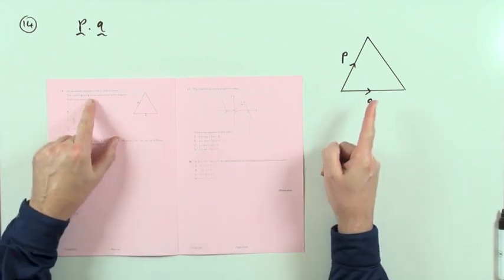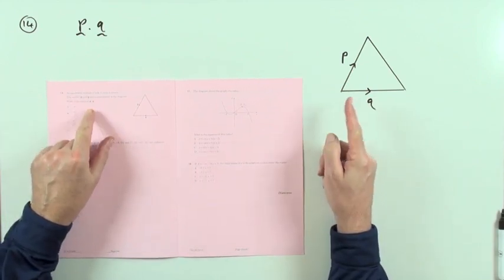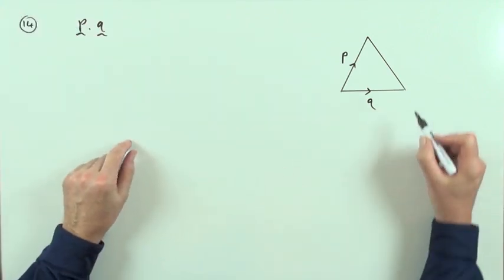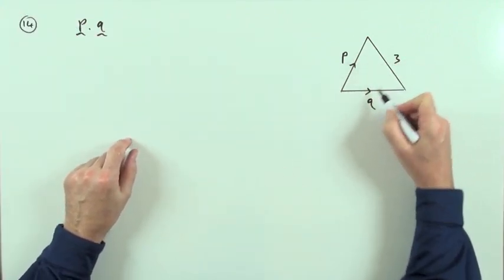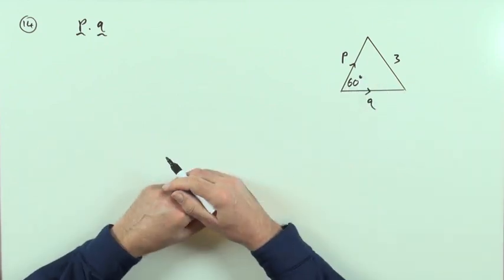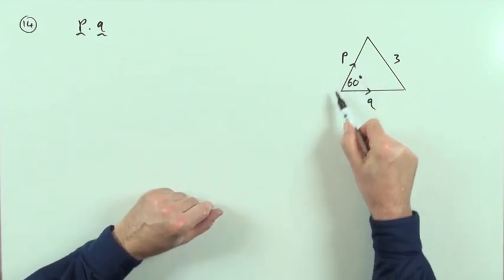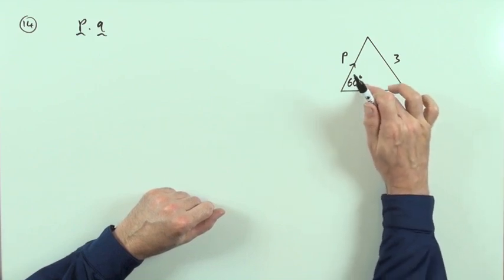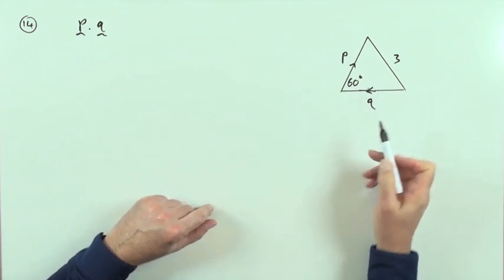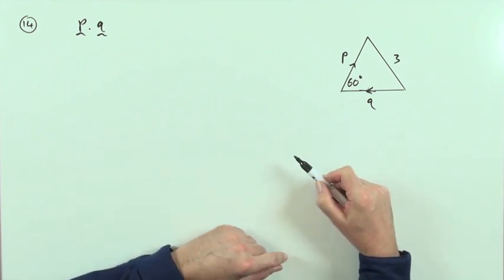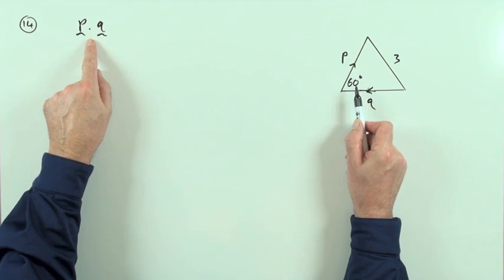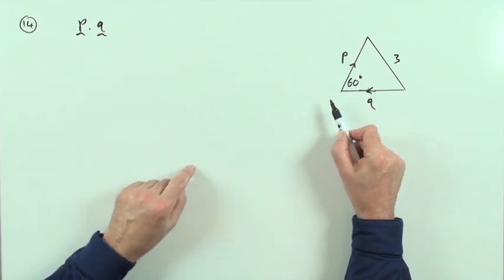Number 14: an equilateral triangle of side 3 units is shown. What's the value of p dot q? Equilateral triangle of side 3 means all sides are 3 and all angles are 60 degrees, so there's 60 degrees between the vectors. One thing to watch out for: if those arrows had been reversed, the angle between them wouldn't have been 60 degrees.